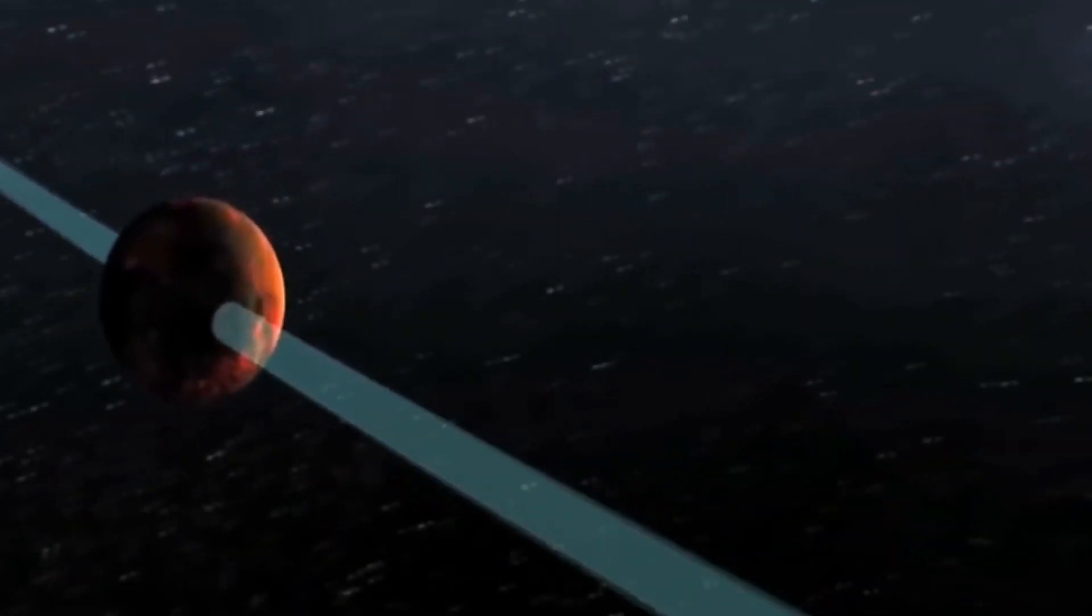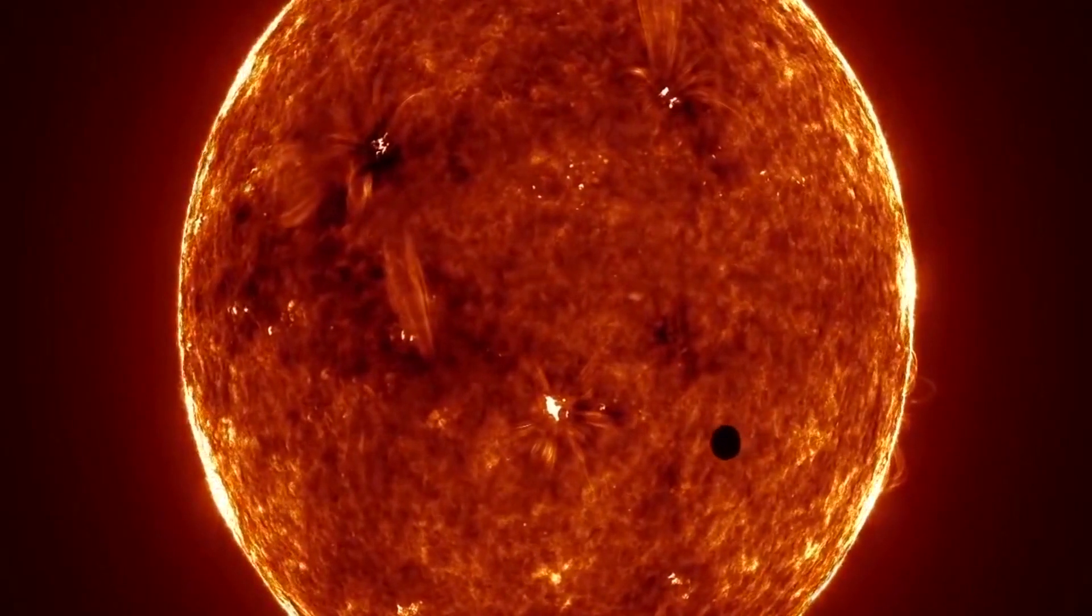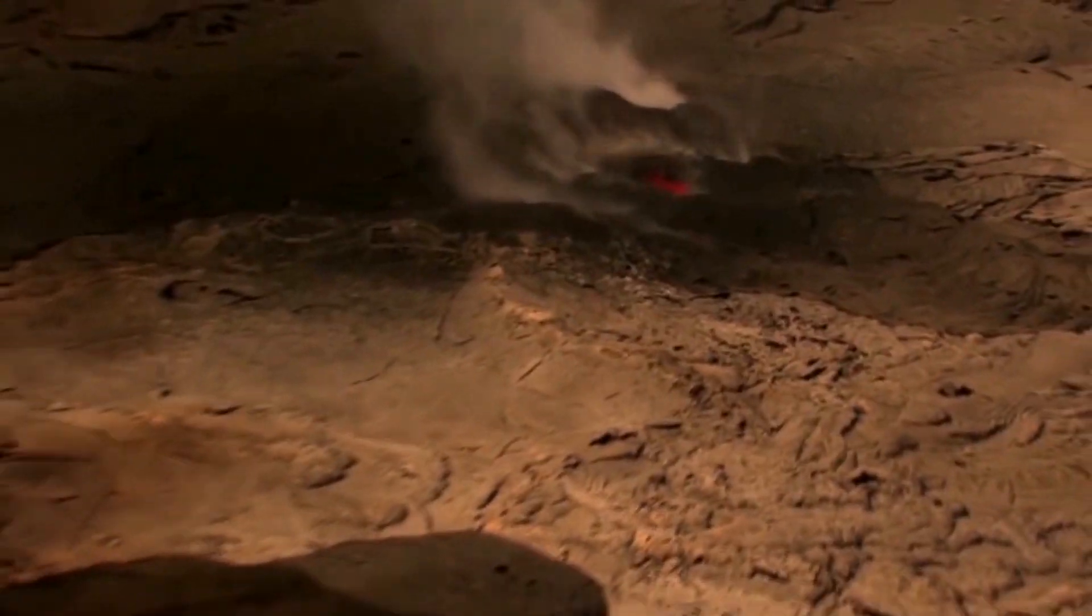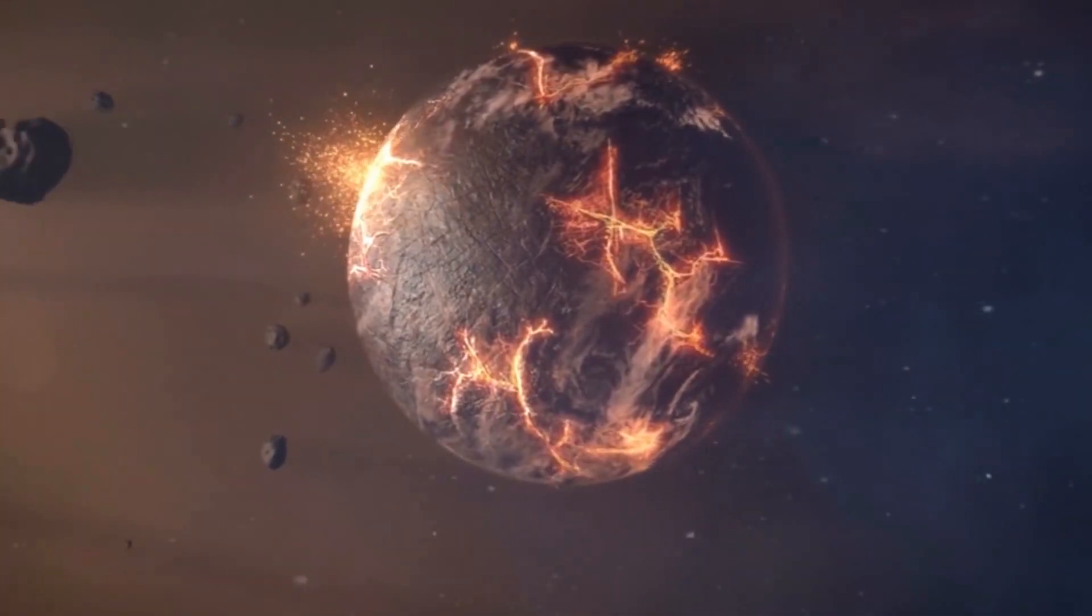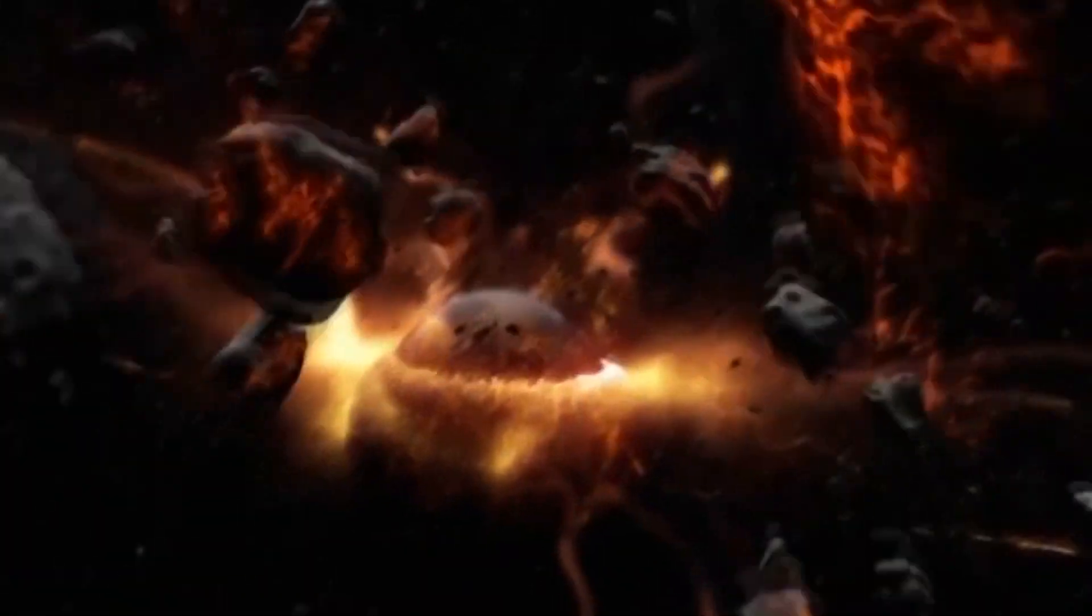At that time our sun will run out its energy reserve and start to die slowly transforming into a red giant. That can mean only one thing to the solar system. All its planets, including Earth, will turn into charred spheres.